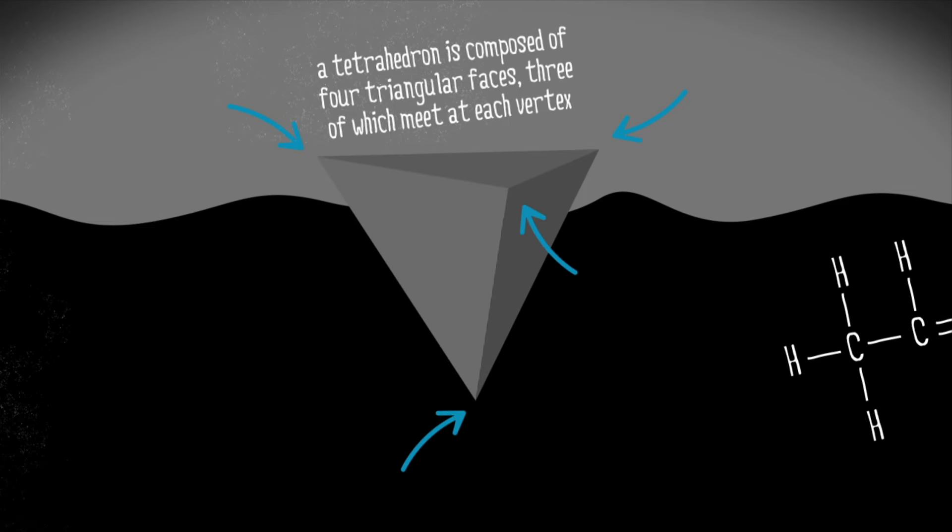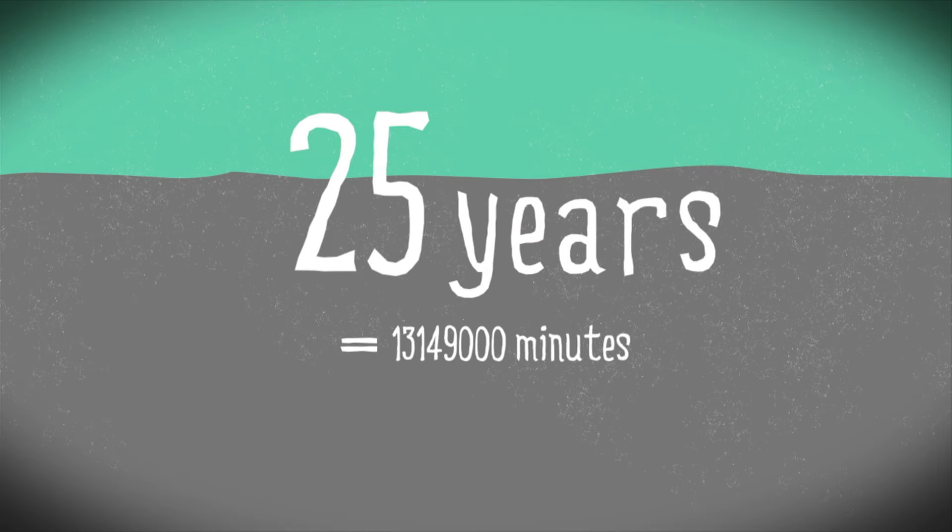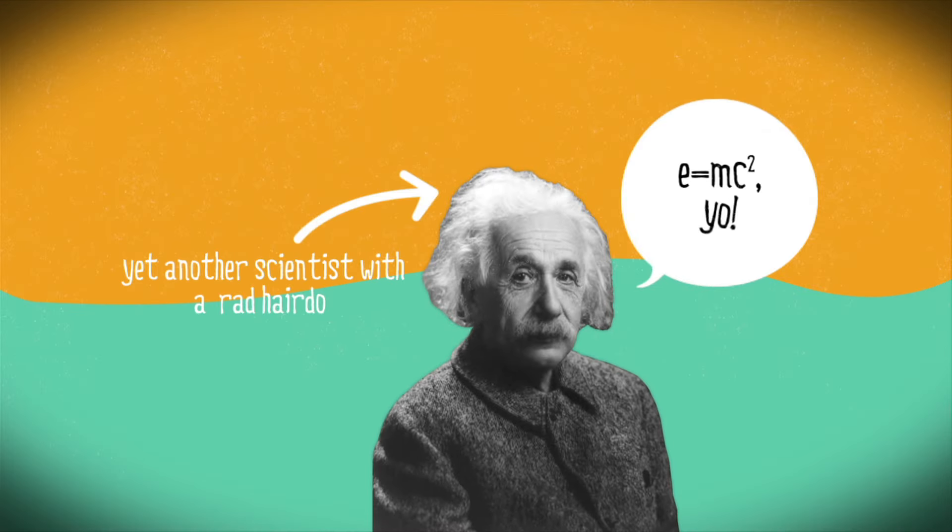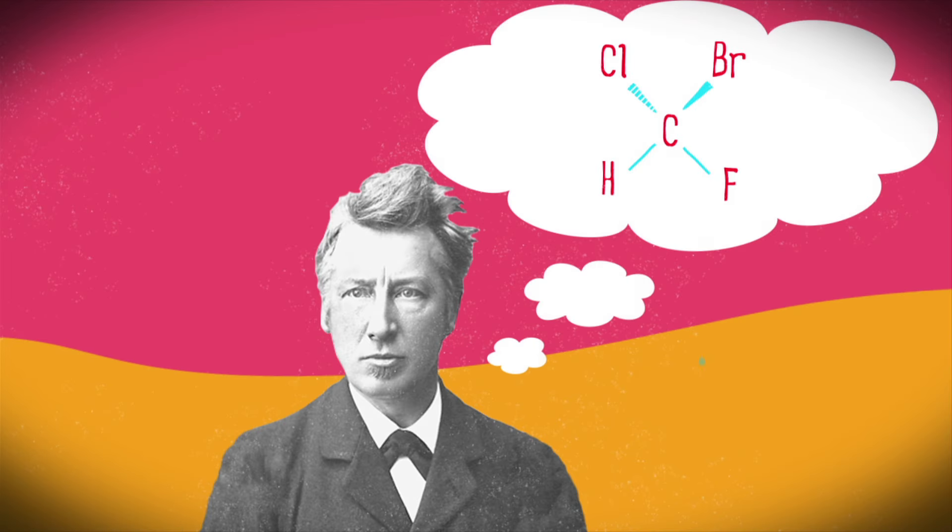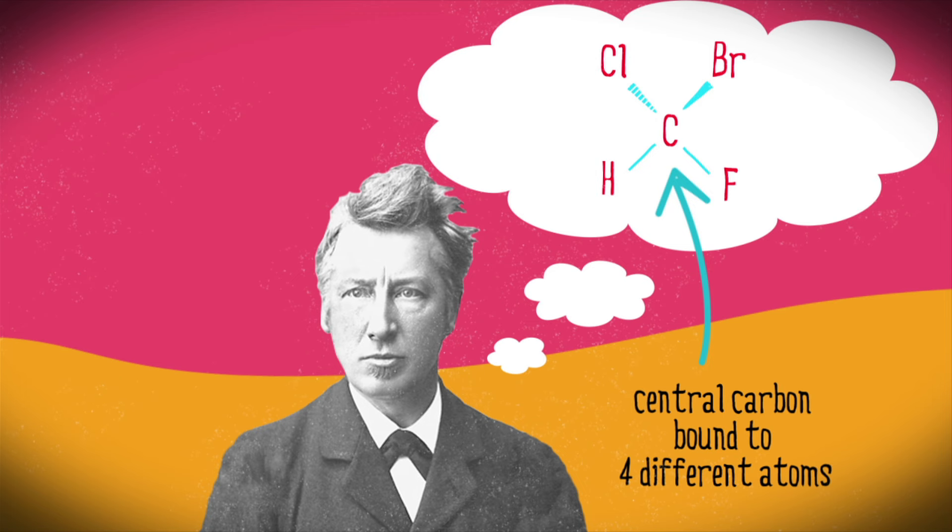It would take over 25 years for the quantum revolution to theoretically validate his hypothesis, but Van't Hoff supported his theory using optical rotation. Van't Hoff noticed that only compounds containing a central carbon bound to four different atoms or groups rotated plane polarized light. Clearly, there's something unique about this class of compounds.